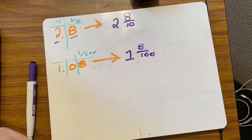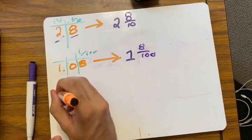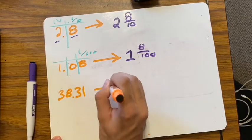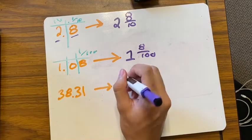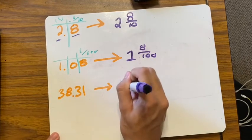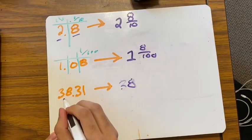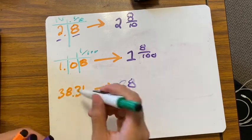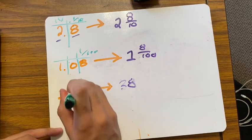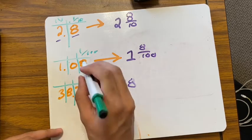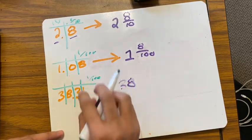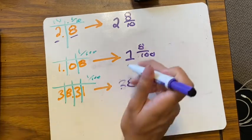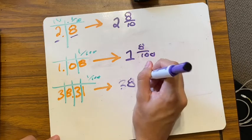Let's do a larger number: 38.31. That means I have 38 as my whole number. What about my 31? That is in my hundredths place — my first decimal digit is in the tenths and the second is in the hundredths — so I have 31 hundredths: 38 and 31 hundredths.